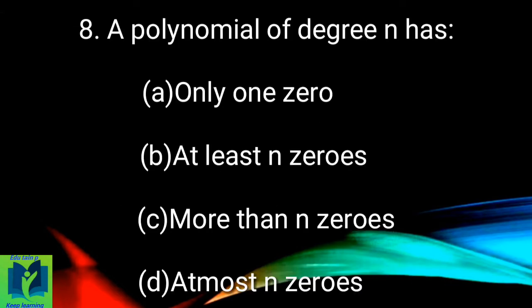A polynomial of degree n has: (a) only one zero, (b) at least n zeros, (c) more than n zeros, (d) at most n zeros.